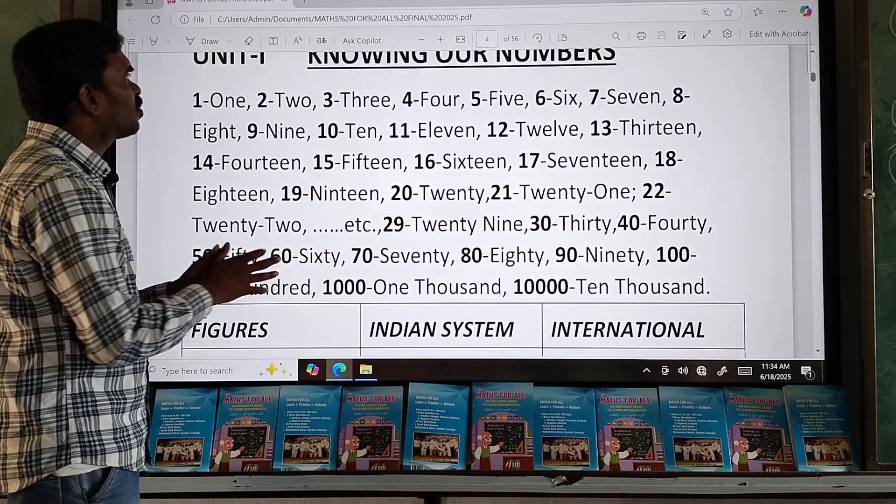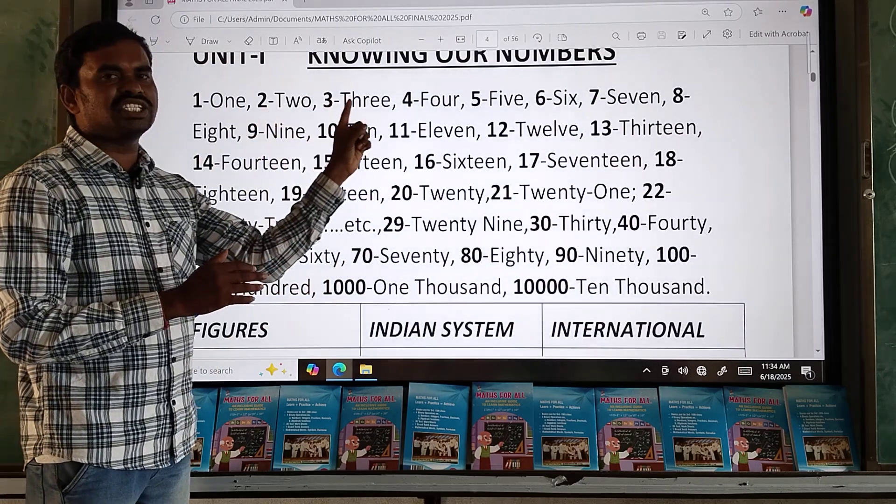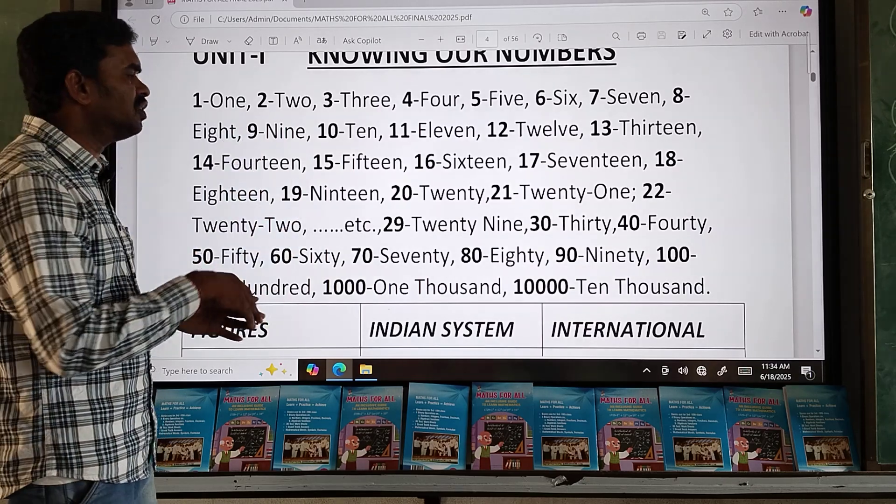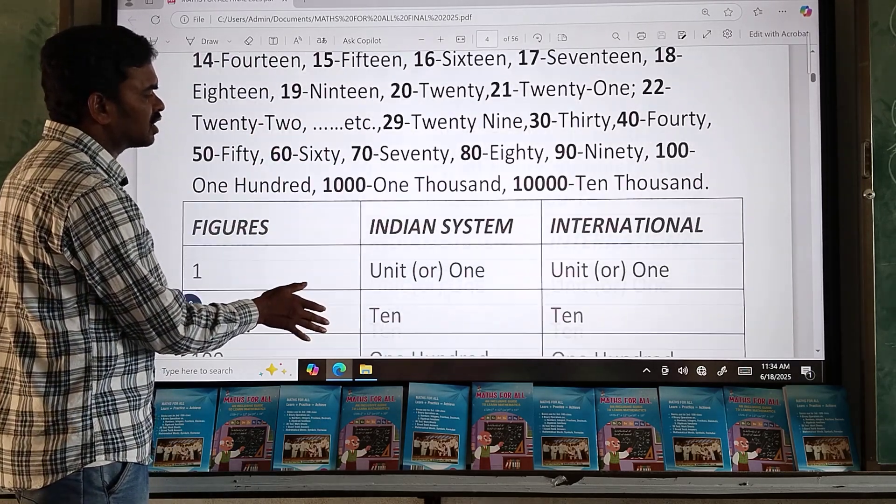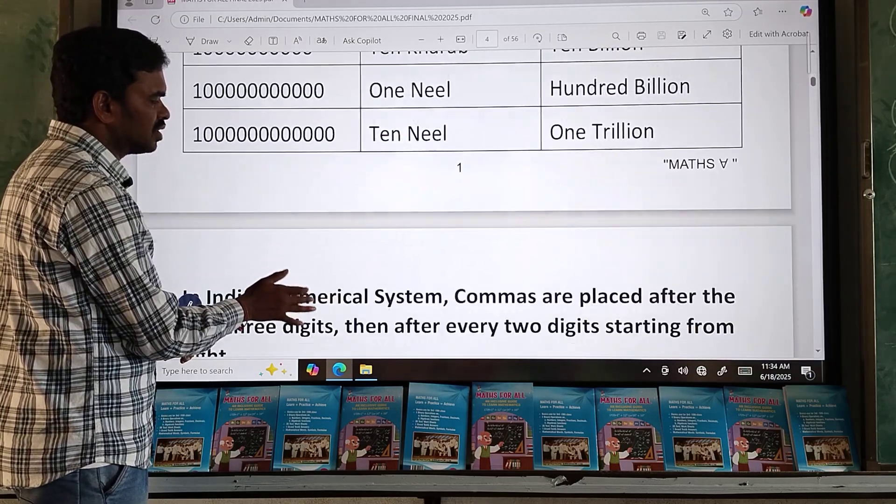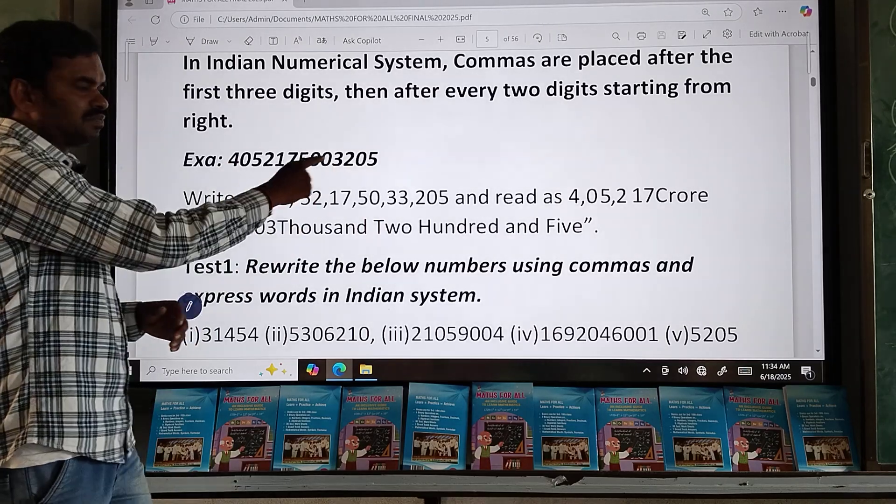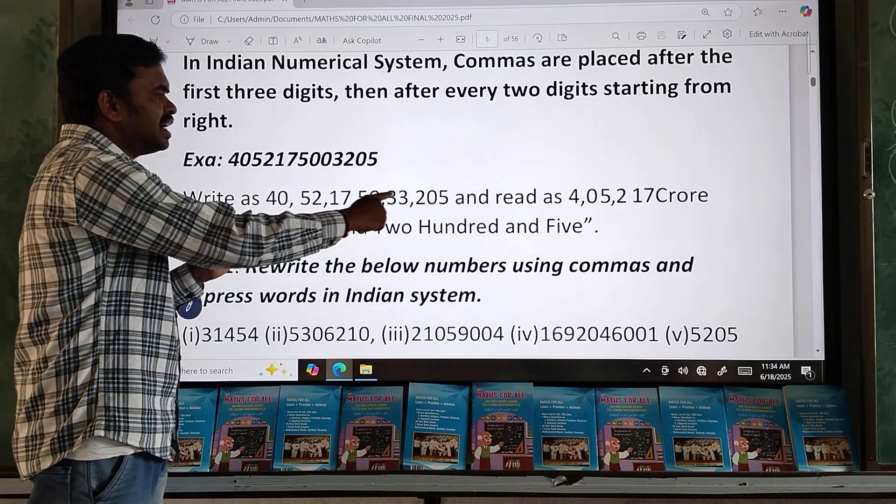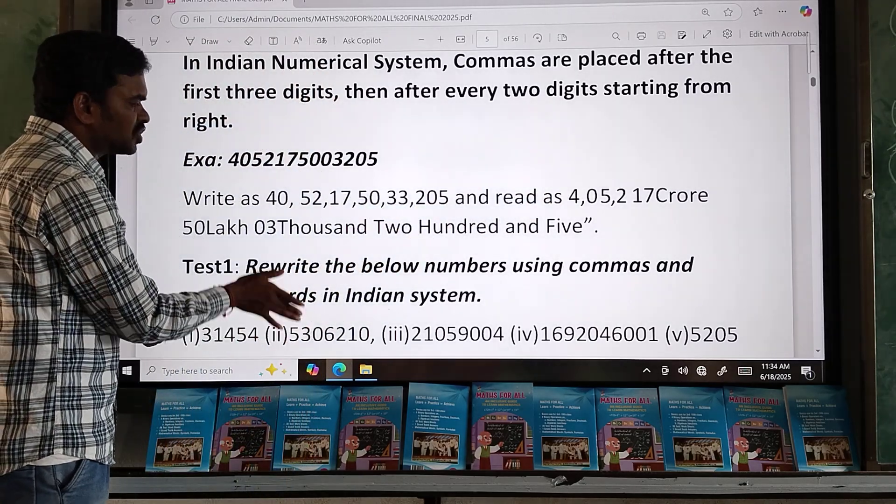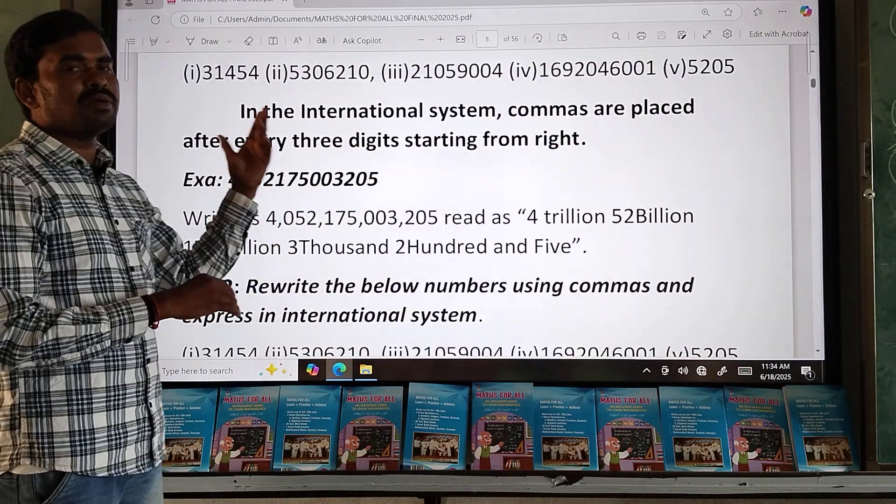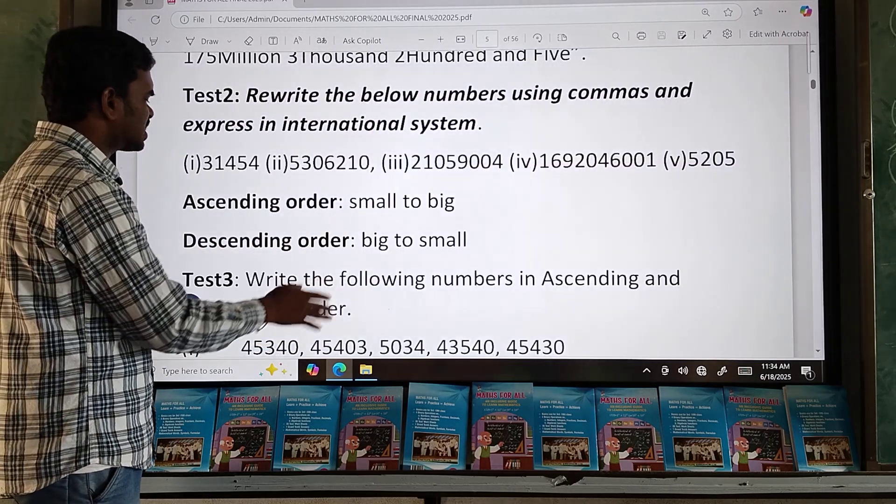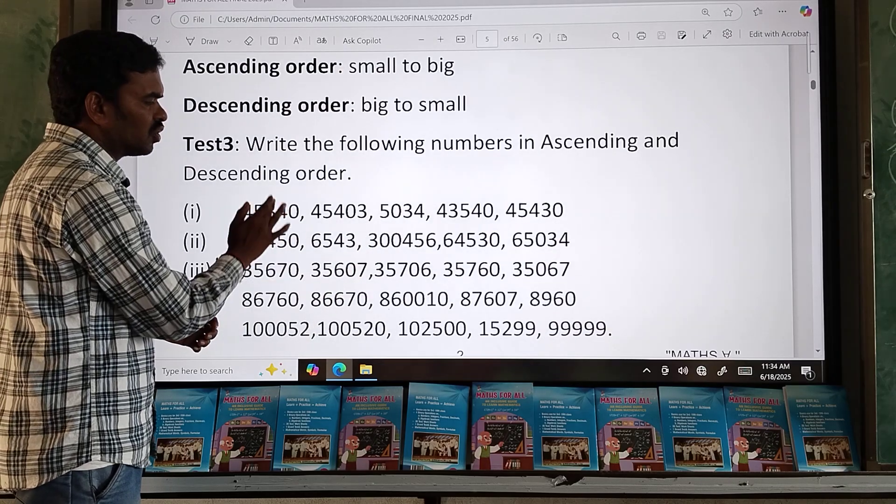First of all, this book starts from 1, 2, 3. This is useful for all students from starting, and they can increase levels to 100,000. Next, Indian system and international system. See, one number, how to use in the Indian system by using commas and how to express in words. Then some questions. The same number is asked in the international system also, and the same type of questions are given. Next, what is ascending, what is descending.